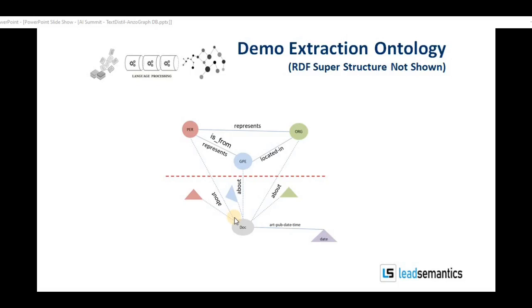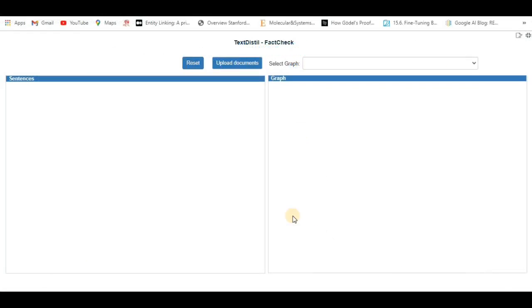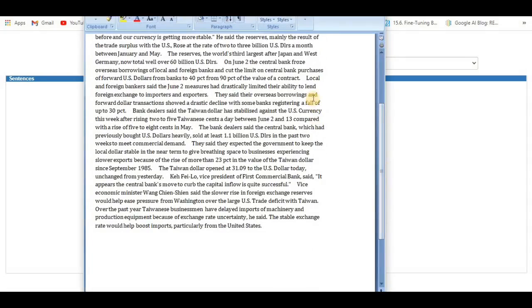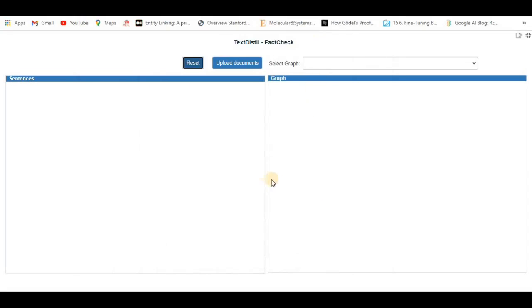We will now run the demo. What you see here is FactCheck, a visual debugging tool connected to a running TextDistil pipeline. Demo here shows processing of text documents like the sample here. We will now load 25 such documents from the Reuters corpus.